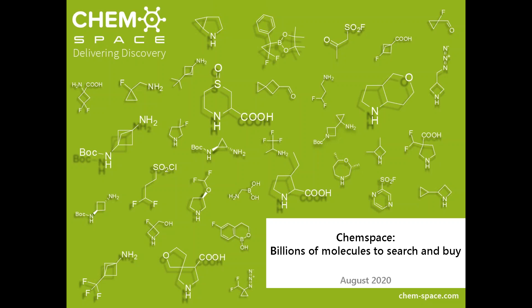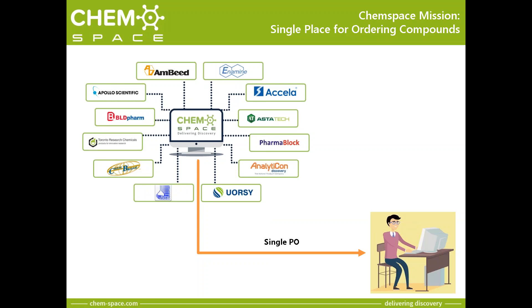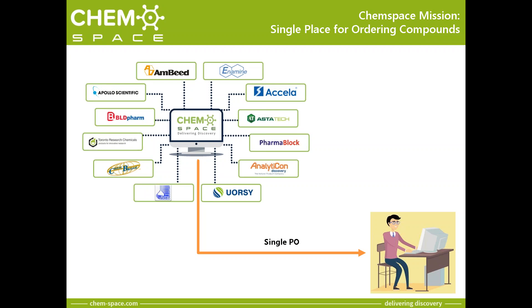ChemSpace is an online catalog, searchable and purchasable, that contains billions of small molecules. It's a marketplace that hosts compounds from over 70 suppliers. It's been created to make your life easier and to source from one place rather than sending 70 emails to all the suppliers. Currently, ChemSpace database contains over 330 in-stock building blocks and reagents from over 30 preferred suppliers, available within one to seven business days. We have over 5.10 million in-stock screening compounds, all focused on medicinal chemistry and pharma research.